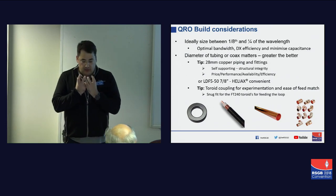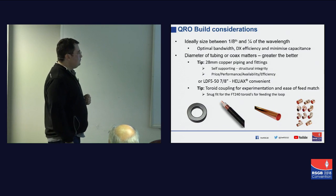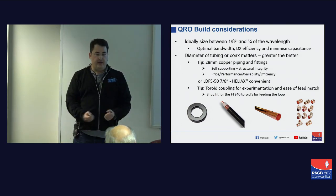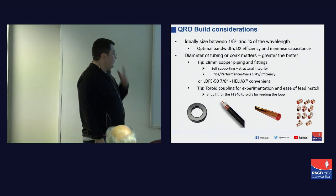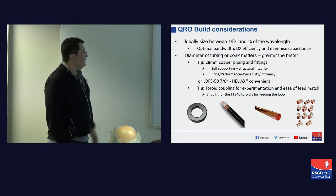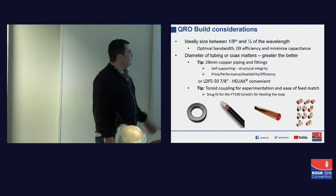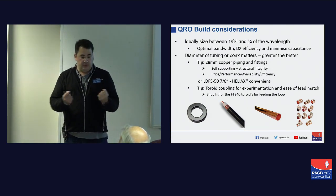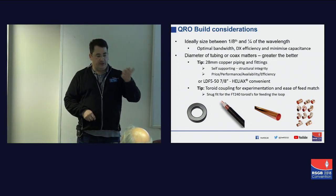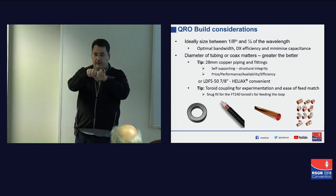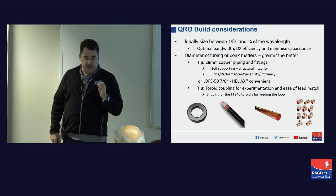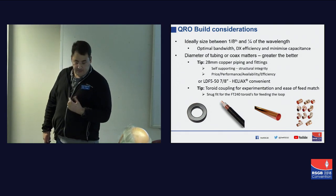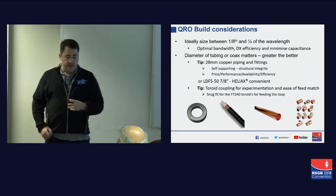In terms of material, I would recommend Heliax — 7/8ths of an inch — really easy; you can get a nice round loop out of that. You can comfortably build a loop and, if you were in the States or a country where you can turn the dials to 11, put 2 kilowatts through it without anything melting. In the UK it will quite comfortably handle 400 watts. Or 28mm copper — I recommend 28mm rather than 22mm because 28mm is self-supporting if you're building a large loop, and an FT240 ferrite core fits really snugly around it.